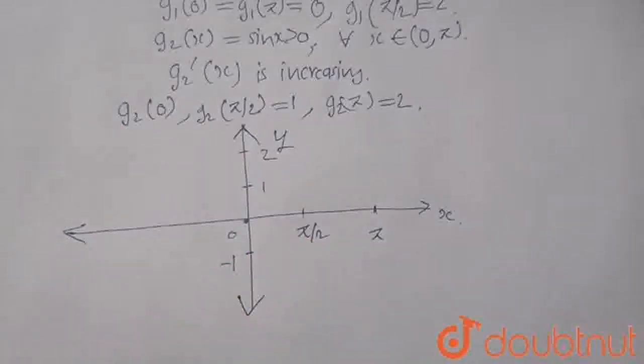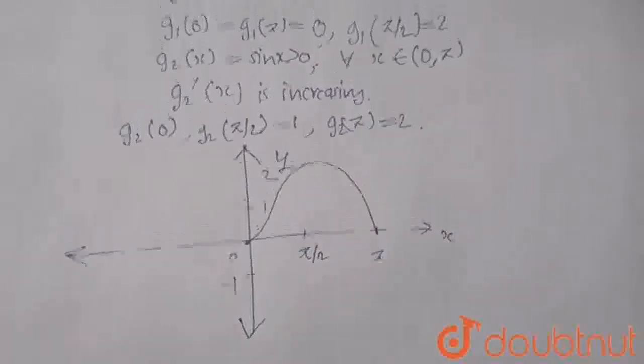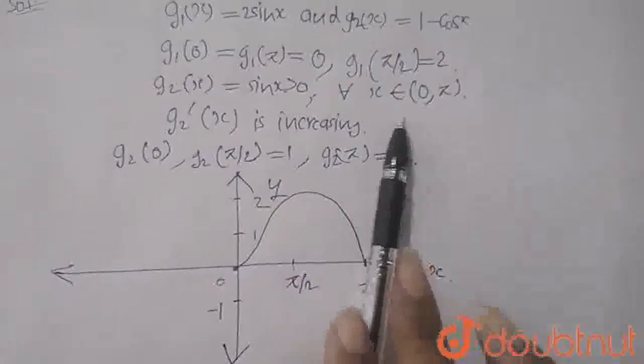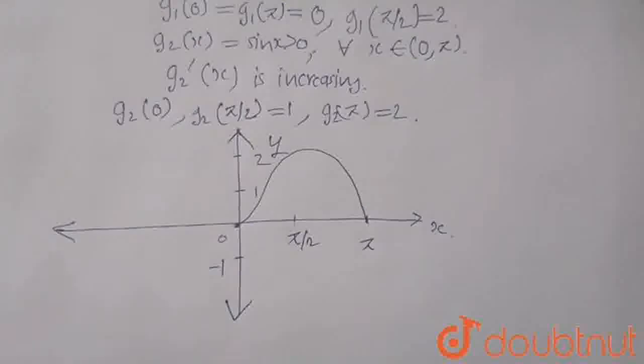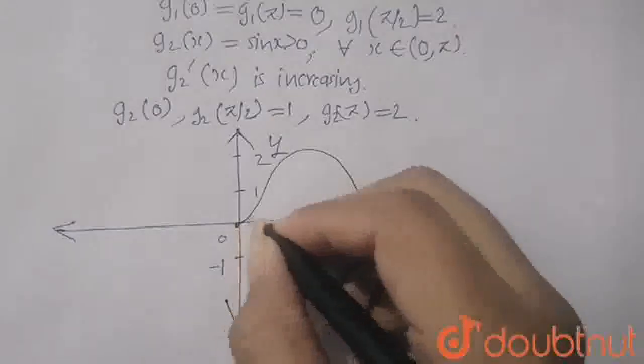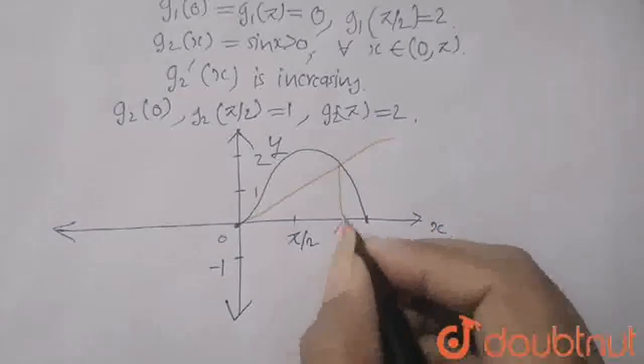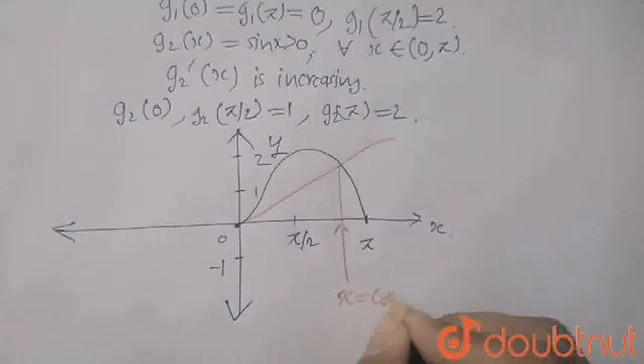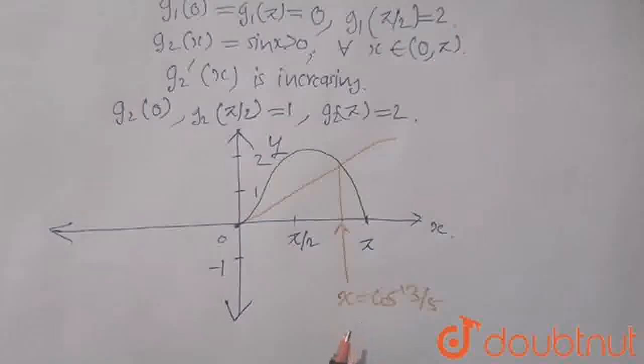So as you can see, for 2sinx, the graph crosses from 0 to pi by 2 as we have calculated here. Its range is from 0 to pi in this graph. And for 1 minus cosx, the y equals to 1 minus cosx grows like this. It cuts this graph here and this point is x equals to cos inverse 3 by 5.